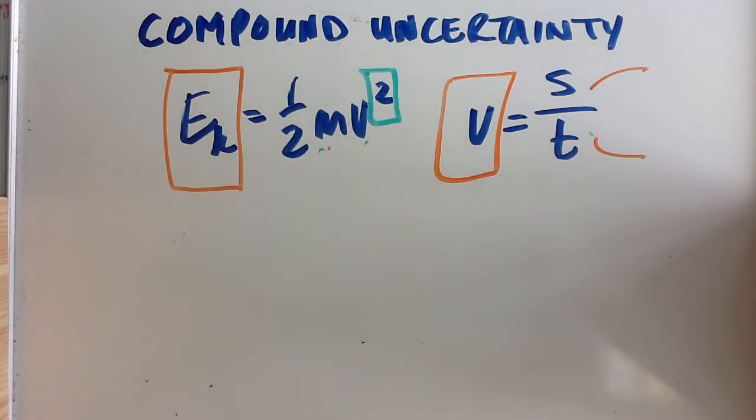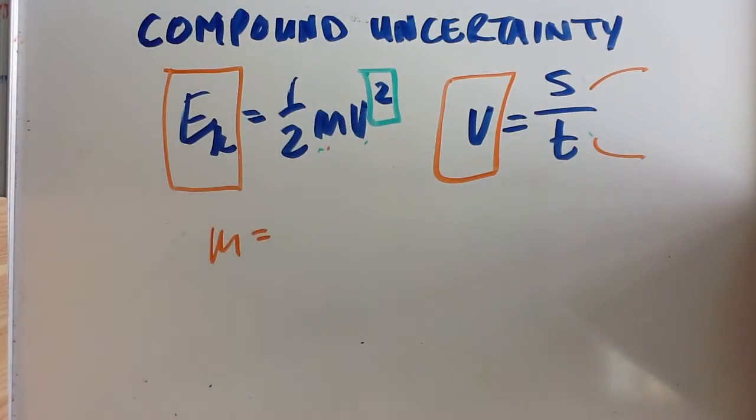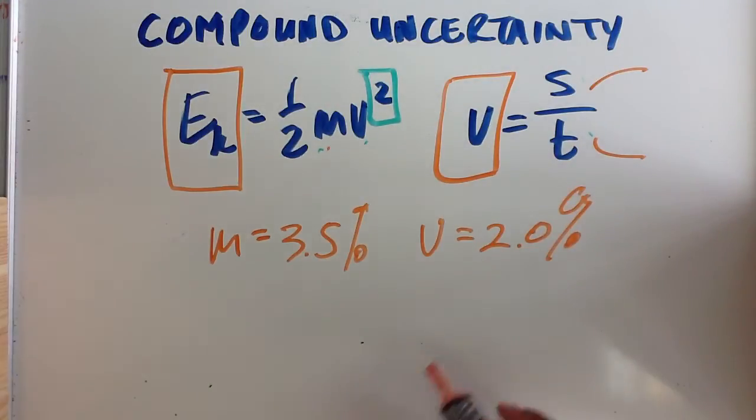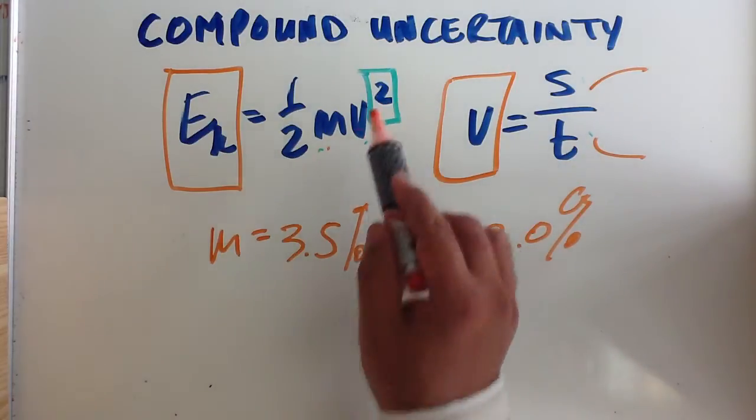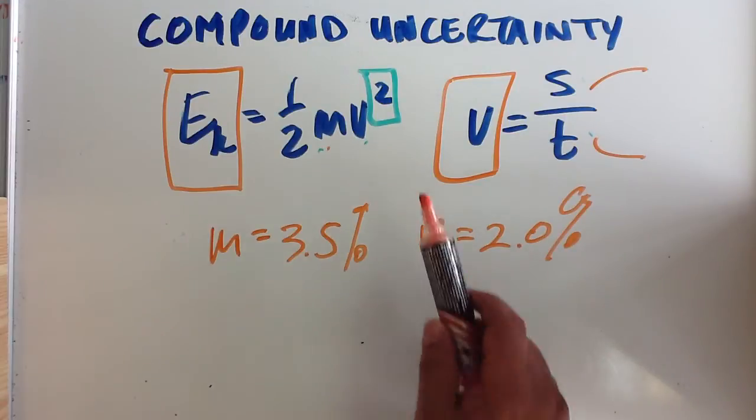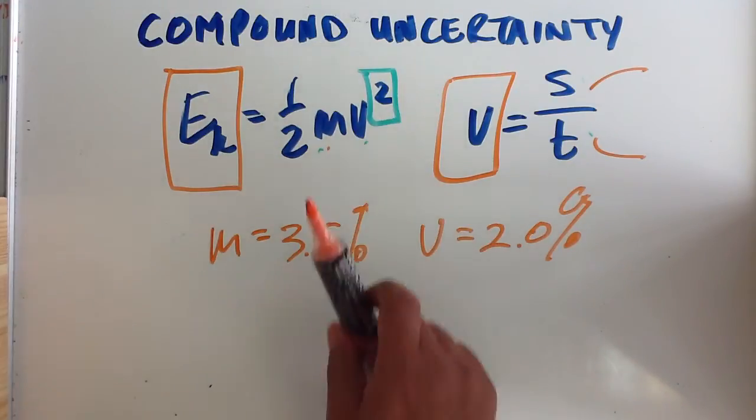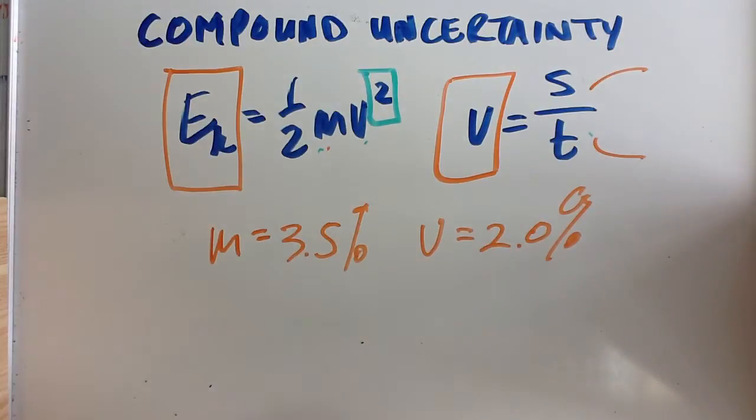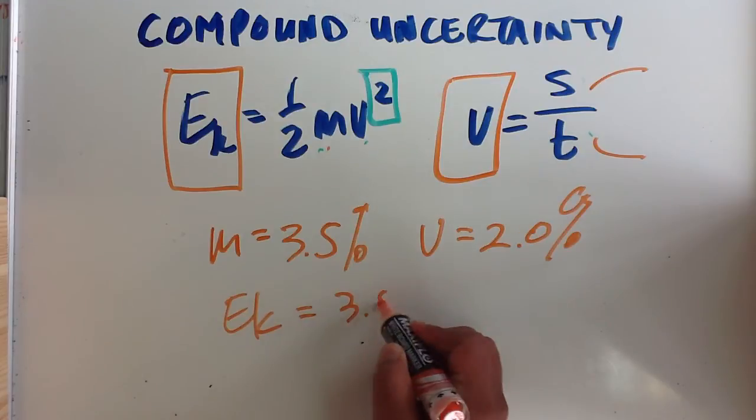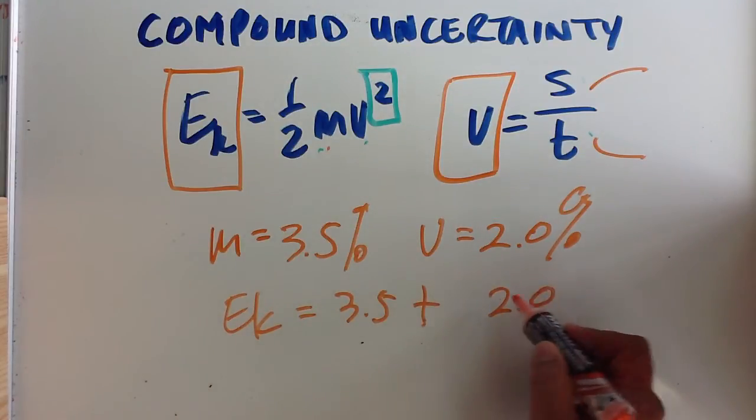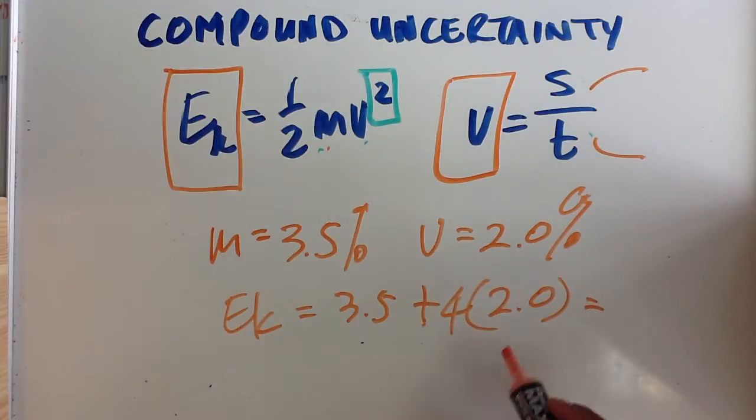The quantities that have powers attached to them, like the velocity, is something that we need to also consider. So if the mass is 3.5%, and the velocity is 2%, really what happens, when there's a power attached to something, if it is squared, that uncertainty needs to be doubled. If it is cubed, that uncertainty needs to be times 3. If it's to the power of 4, that uncertainty needs to be multiplied by 4. So in this case, really, the true answer would be 3.5 plus 2 multiplied by that 4, and so what we would get is 11.5%.